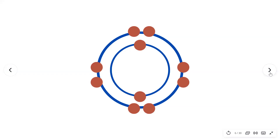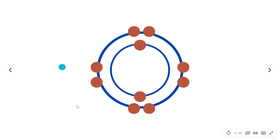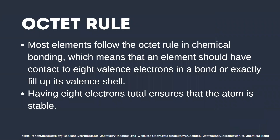The outer shell of many atoms — hydrogen being an exception — holds 8 electrons. Atoms that have 8 electrons are considered chemically stable. As shown on screen, this is a stable atom because it has 8 electrons on its valence shell. We often say they fulfill what is called the octet rule. Most elements follow the octet rule in chemical bonding, which means that an element should have 8 valence electrons in a bond, or exactly fill up its valence shell. Having 8 electrons total ensures that the atom is stable.